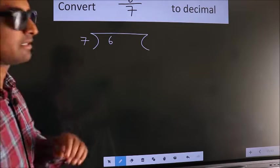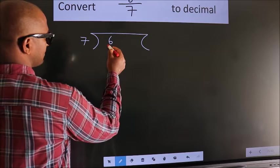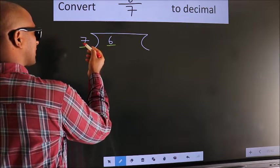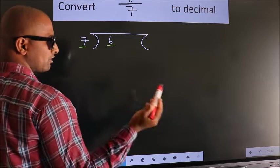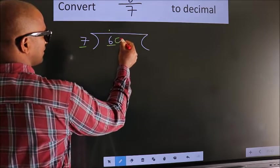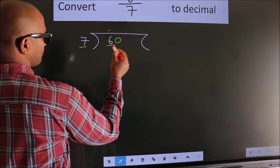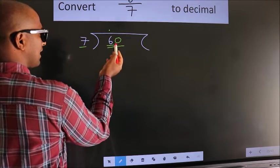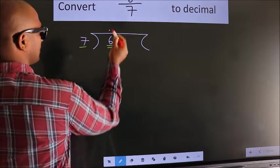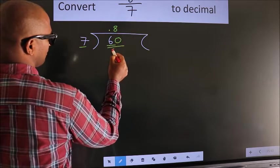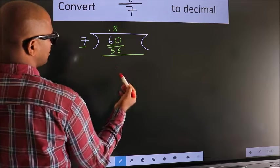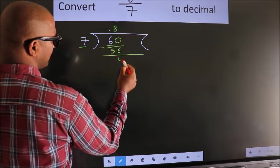Next. Here we have 6, here 7. 6 is smaller than 7. So what we should do is, we should put a dot here and take 0 here. So 60. A number close to 60 in the 7 table is 7 eights, 56. Now we subtract. We get 4.